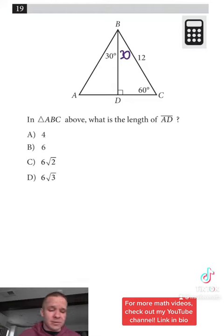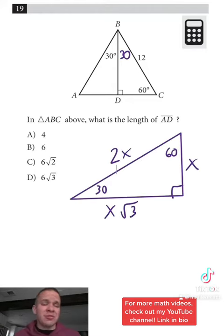Perhaps we review our 30, 60, 90 triangles. So in our 30, 60, 90 triangles, our shortest side is across from our smallest angle, which is the 30 degree angle.